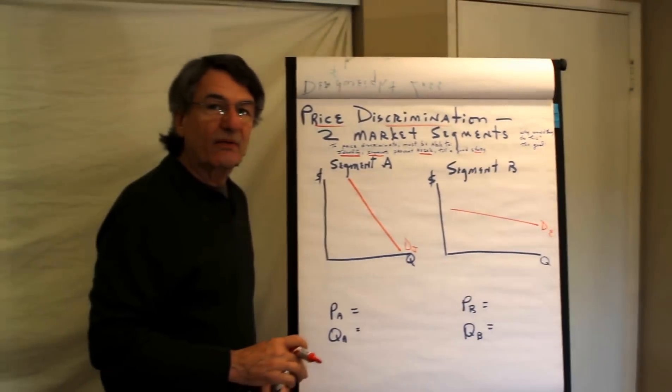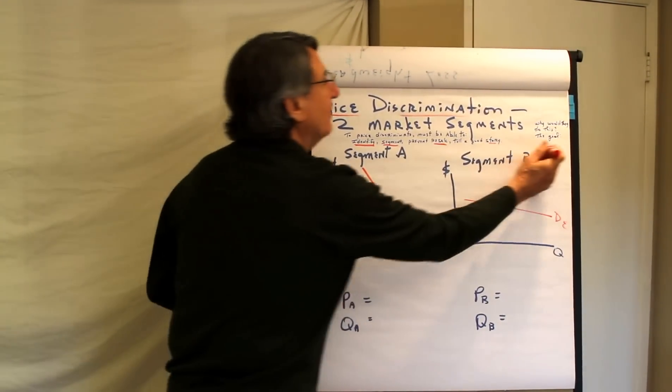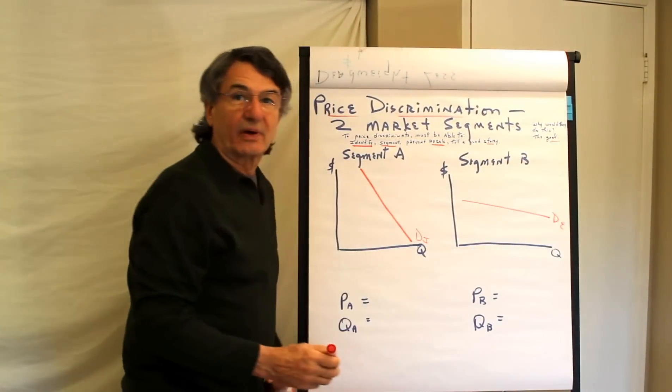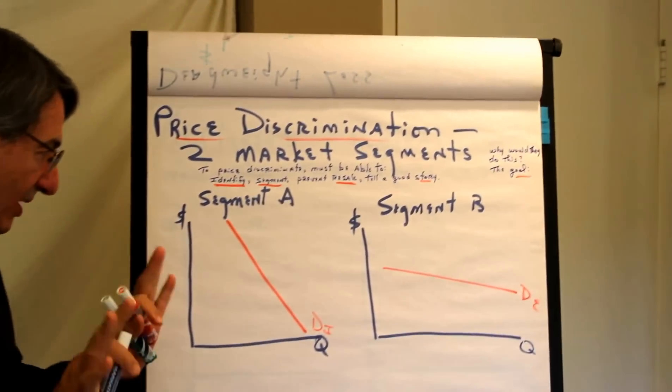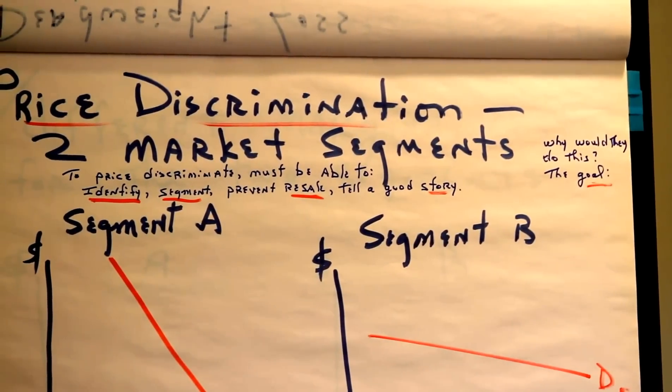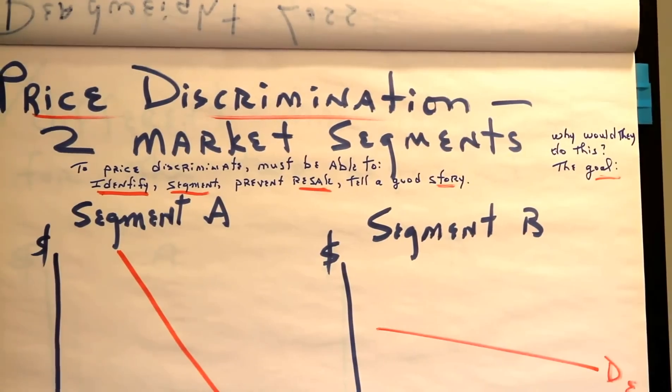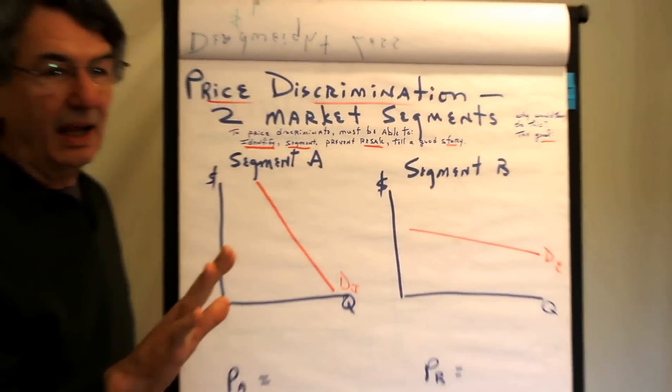And why would a firm want to price discriminate? That is, what is the goal of a firm? And that is, to maximize total profits. We can talk about whether it's good or bad next. But, the most common, of course, is something like airline industry.